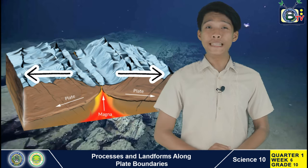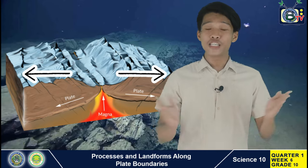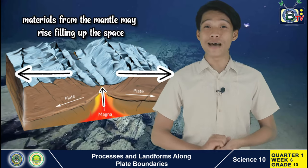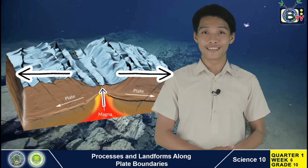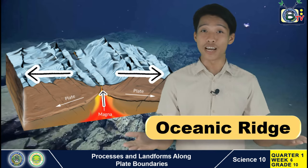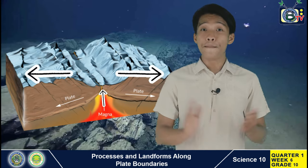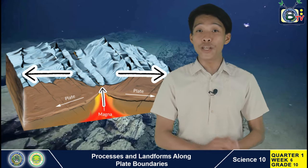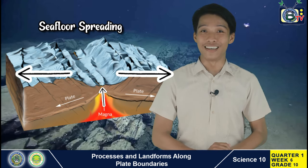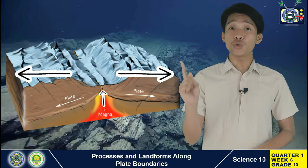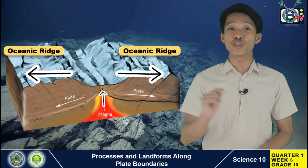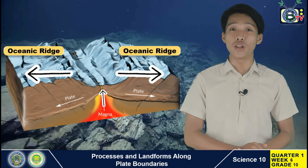Plate divergence is believed to be a slow, continuous process. As the plates move away, the gap between them increases. Materials from the mantle may rise and fill up the space. These materials pile up near the tension zone, forming mountain-like structures called the oceanic ridge. New materials from the mantle push the old ones aside, and the filled-up space between the plates becomes a new seafloor — a process known as seafloor spreading. Since the oceanic crust is thinner than the continental crust, the creation of a linear-shaped lowland between oceanic ridges develops, and this geologic feature is called the Rift Valley.